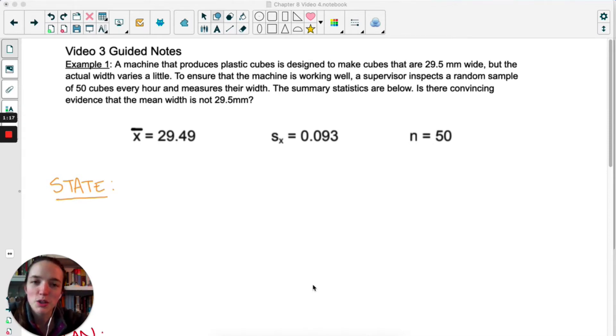They want to ensure that the machine is working well, so a supervisor inspects a random sample of 50 cubes every hour and measures their width. We have the summary statistics from one of those samples below. The question is, is there convincing evidence that the mean width is not 29.5 millimeters?